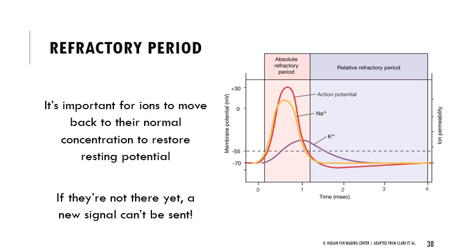When the signal is sent - the action potential and hyperpolarization back to resting membrane potential - the ions have to restabilize and get back to their normal state. Until they're there, a new signal can't be sent. These are called refractory periods where you can't do anything else until things get back to the way they were before.